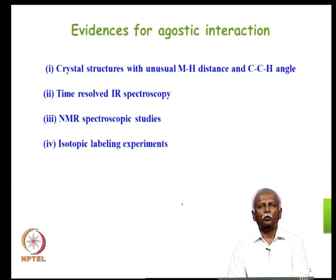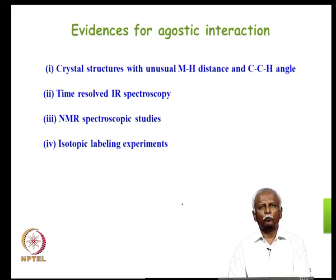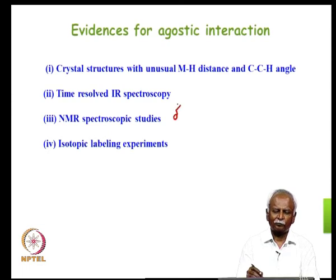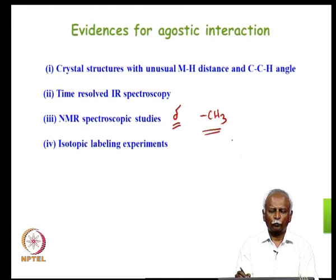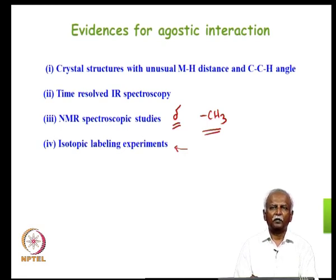The other evidences for agostic interaction are as follows. Not only can we look at crystal structures with anomalous bond angles and distances, we could also look at time-resolved infrared spectroscopy where these intermediates have been noted in the spectrum of molecules generated in a transient way. Anomalous spectroscopic NMR studies also show anomalous chemical shifts — the chemical shifts of C-H bonds which are interacting with metal are different from those that do not. Restricted rotation of a methyl group is possible when one of the hydrogens is interacting with a metal. Isotopic labelling studies have also been made, all pointing to the fact that there can be weak interaction between the metal and the C-H bond.